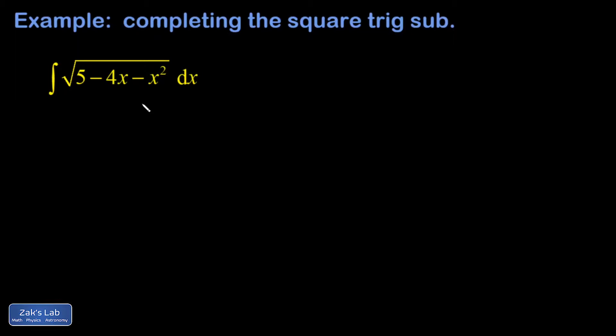The problem here is that my variables are mixed up and what I need to do is express all of these variables with a single squared binomial so that I can do the substitution. That's called completing the square. So let's just focus on the interior of the square root.